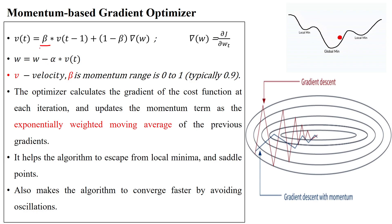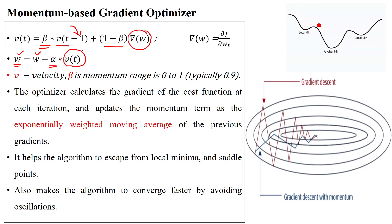The algorithm uses the momentum factor with the velocity at time period t minus one, plus one minus the momentum factor multiplied by the gradient with respect to all parameters. The parameter is then updated: new parameter value equals old parameter value minus learning rate times the velocity calculated in the previous step.